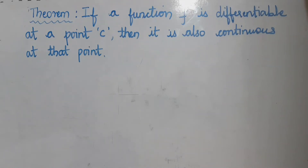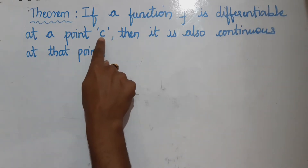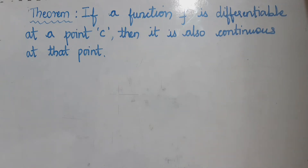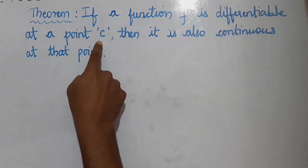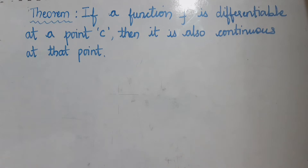If a function f is differentiable at a point c, then it is also continuous at that point. We need to prove that if f is any function which is differentiable at a particular point c, then at this point c this function is continuous — that if a function is differentiable at point c, then that function is also continuous at the same point c.